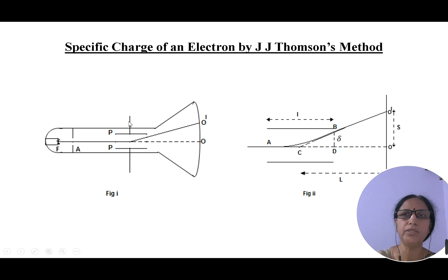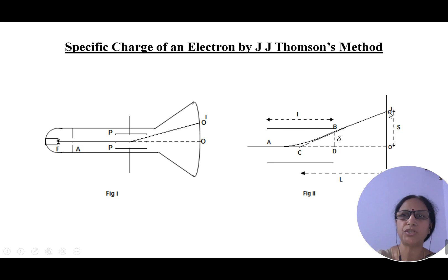As the upper plate is made positive, the electrons start drifting towards the upper plate and the motion is along a curved path as shown in the figure. Until they reach the end of the plate, the electrons move in a curved path. Once they reach the end of the plate, they travel in a straight line and hit the screen at point O'. Therefore, after applying an electric field, the spot shifts from O to O'. The shift of the spot at the end of the plate is delta.